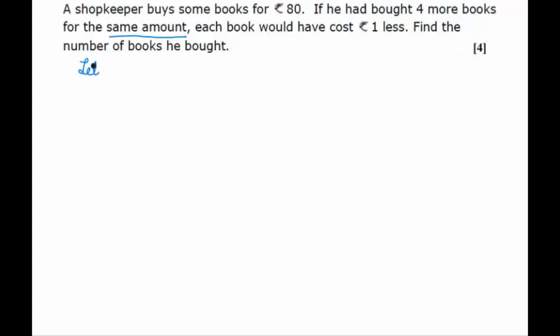So we say that the total number of books he bought equal to x. Since he bought them for rupees 80, we say that cost is equal to rupees 80. Therefore this is the cost of x books, so cost of one book will be equal to 80 upon x rupees.